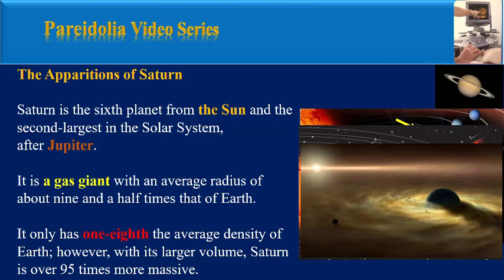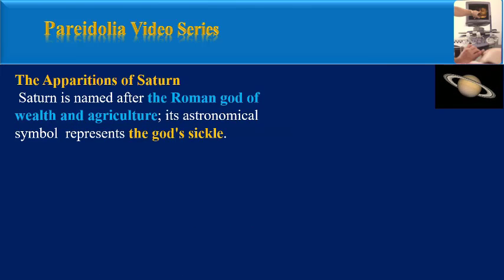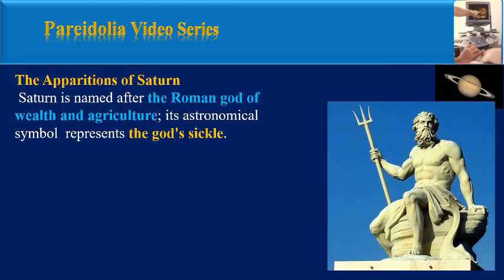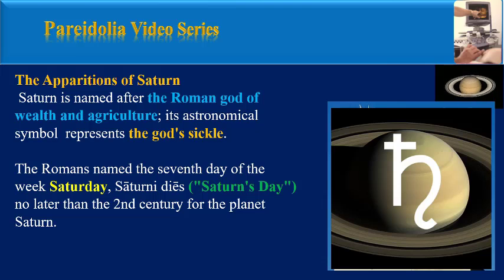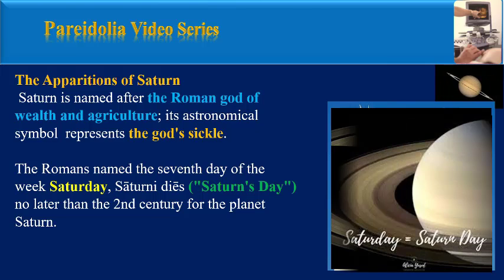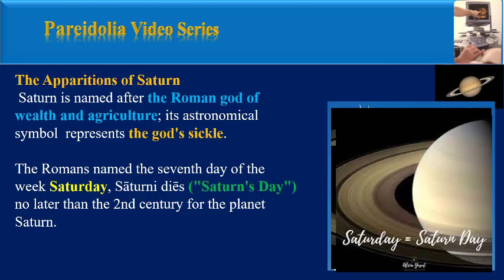However, with its larger volume, Saturn is over 95 times more massive. Saturn is named after the Roman god of wealth and agriculture; its astronomical symbol represents the god's sickle. The Romans named the seventh day of the week Saturday after the planet Saturn, no later than the second century.